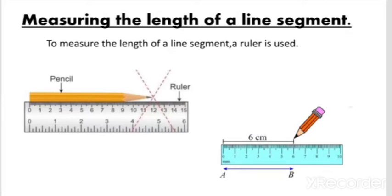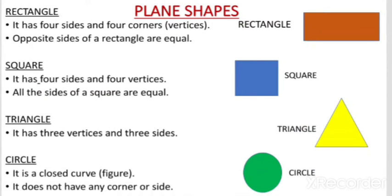With the help of a ruler we can measure many more line segments. Now we will discuss some plane shapes — shapes which we can draw on paper. The first one is rectangle. A rectangle has 4 sides, 4 corners, and 4 vertices. The opposite sides of a rectangle are equal, meaning they have the same length.